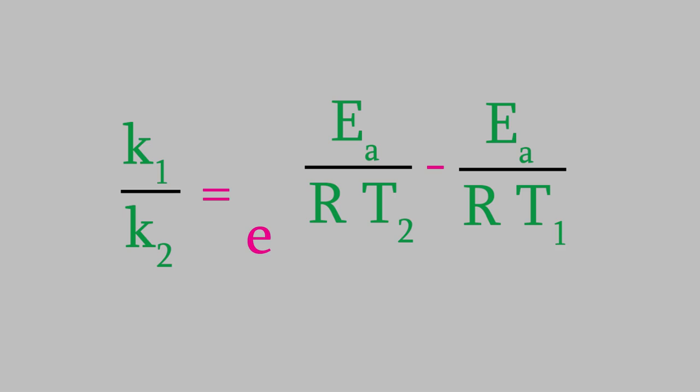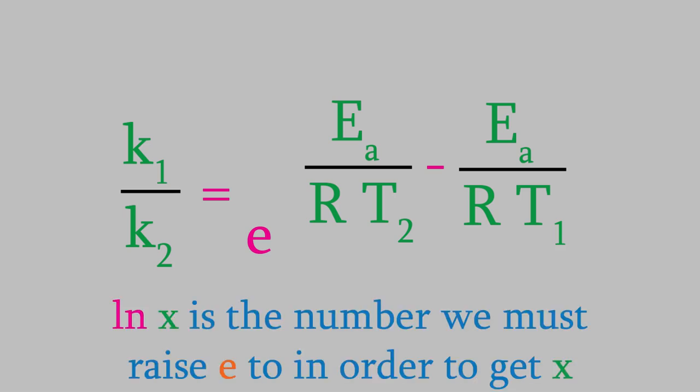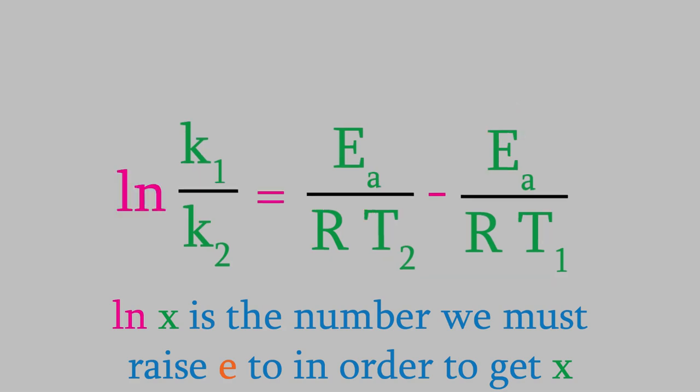From the past couple of videos, you might remember that when we have the number E raised to an exponent, we can get rid of the E if we take the natural logarithm of both sides of the equation. If we do that, we get the natural log of k1 over k2 on the left side. On the right side, we get rid of the E, so we just have what used to be the exponent.